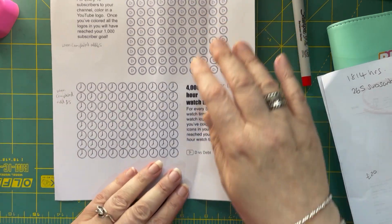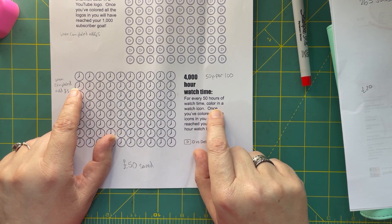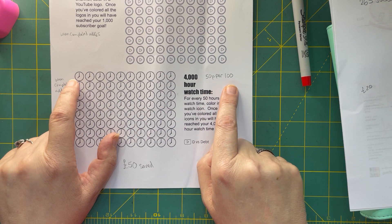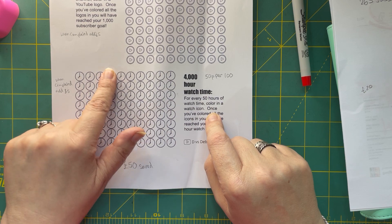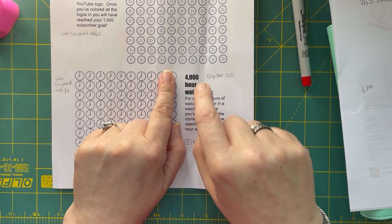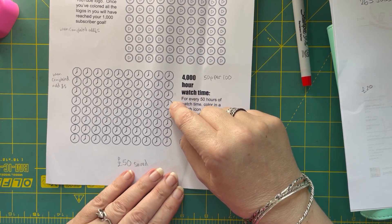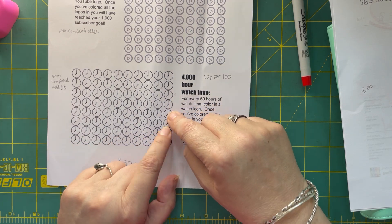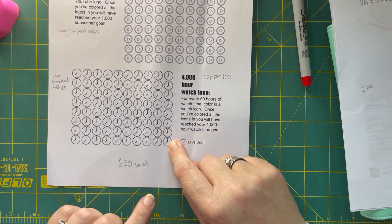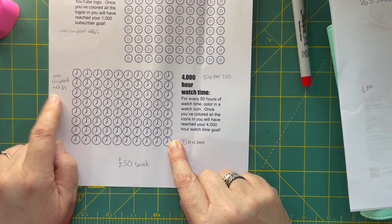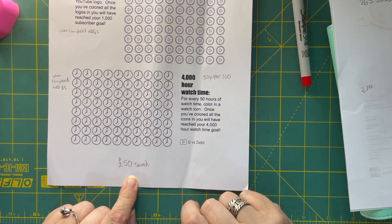And for this one it's going to be for every 50 hours of watch time color in a watch item. So I'm going to do this at 50p per hundred so that's 50p, £1.50, £2.50, so that's £2.50 per row. So 10, 12.50, 15, 17.50, 20 pounds. And the same would apply to that one so once I've got all those I'll add a fiver so that'll mean in total I'll have 50 pounds saved.